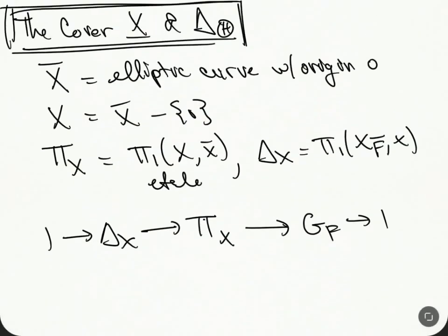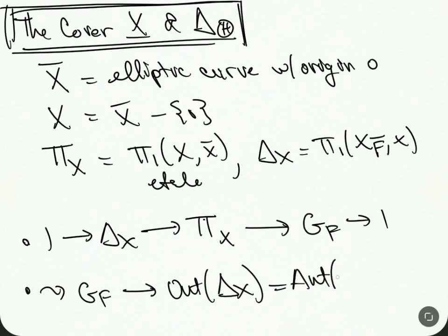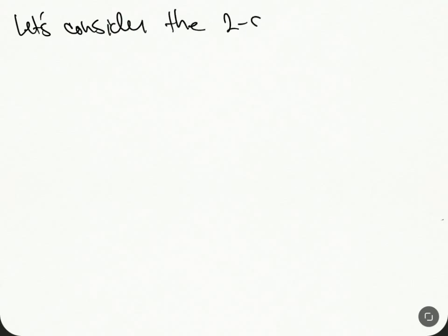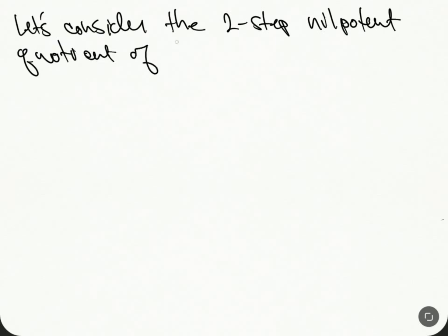For every group there is a natural outer action — this exact sequence gives rise to a natural outer action, as I explained in a previous video — of pi of X, so these are automorphisms modulo inner automorphisms. In particular, there is a representation. Let's consider the two-step nilpotent quotient of pi of X.